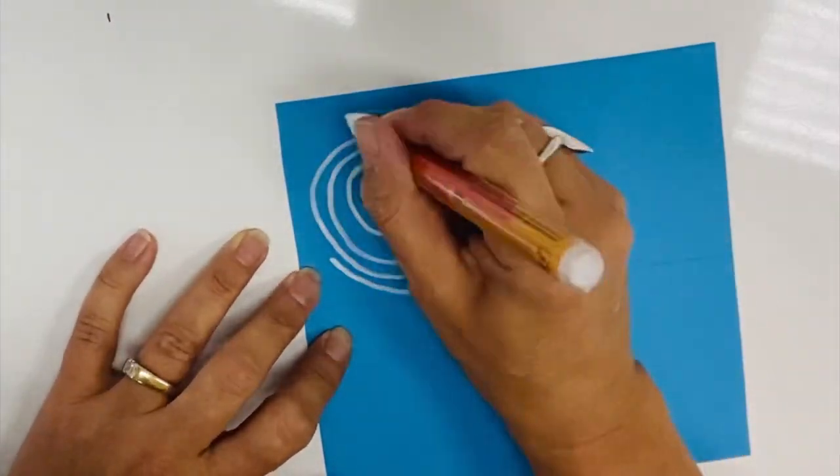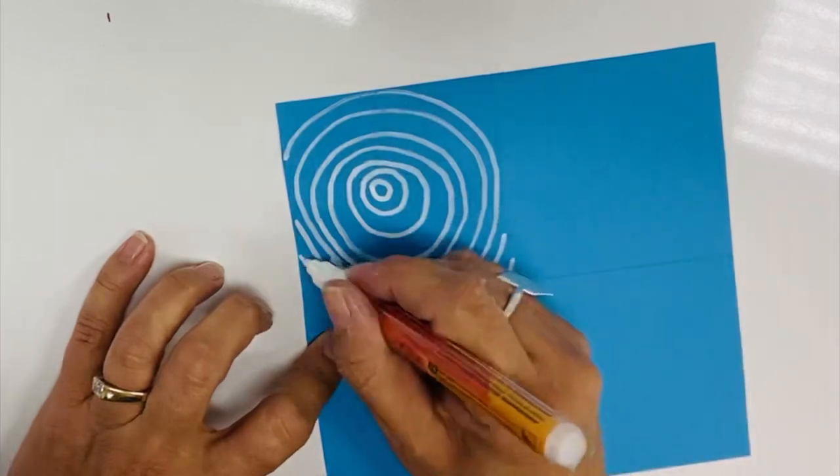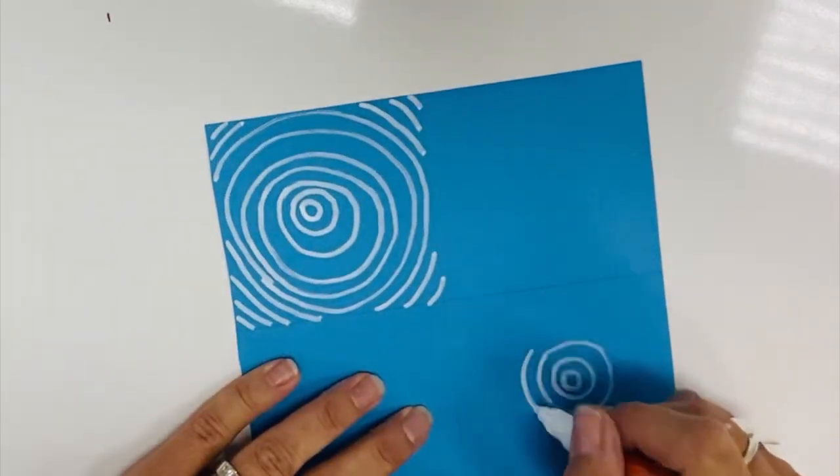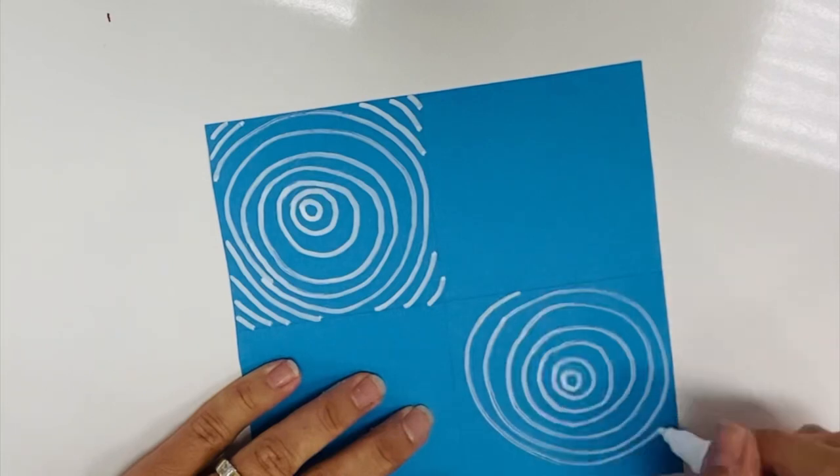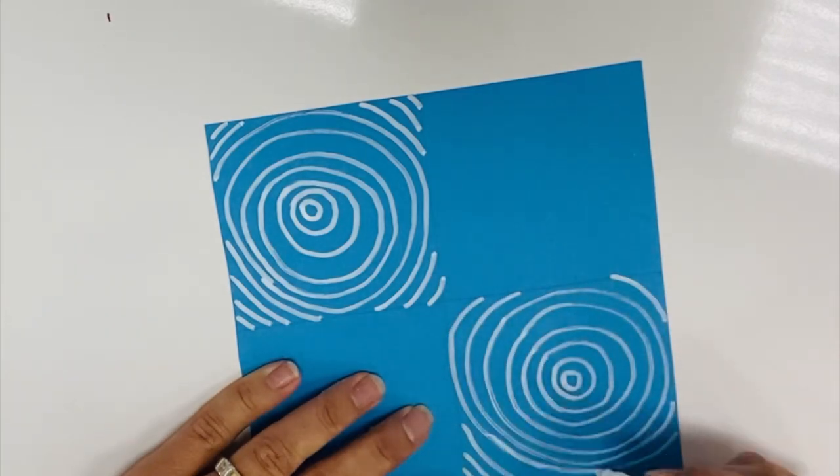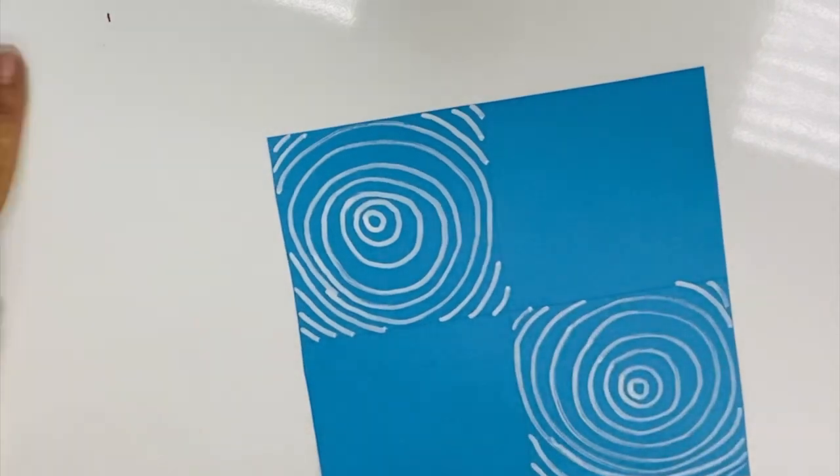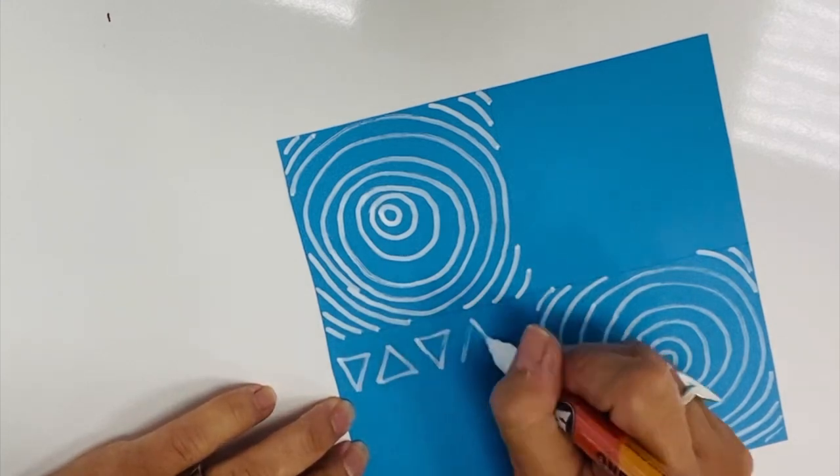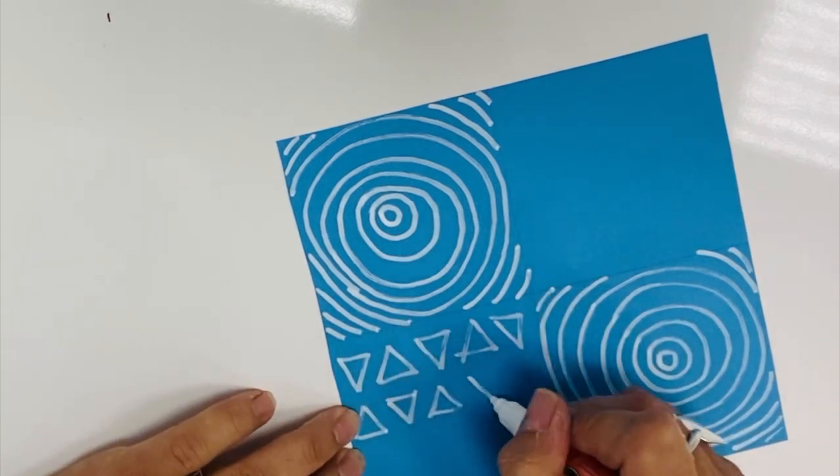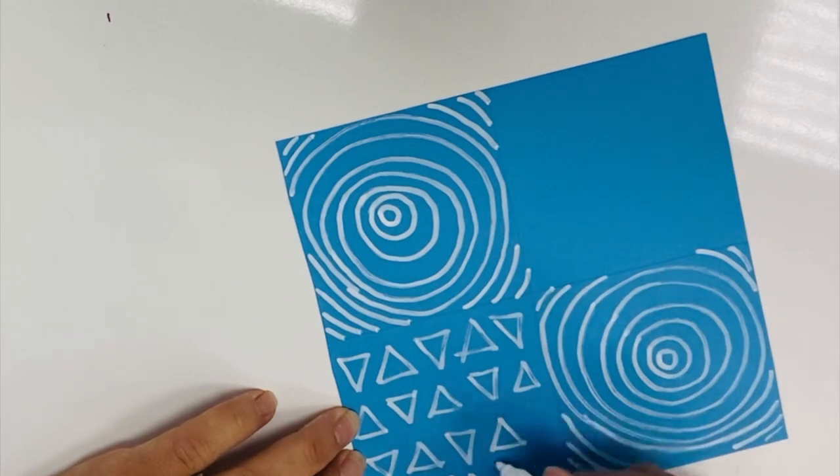Patterns can be very simple. Here you can see that I'm using some circles, then I'm going to add some triangles. You can use geometric shapes, you can use organic shapes.